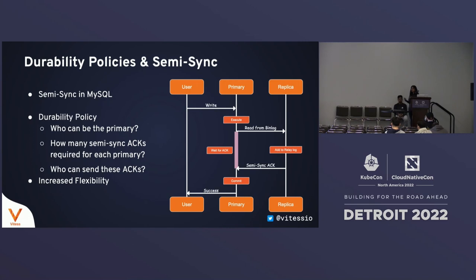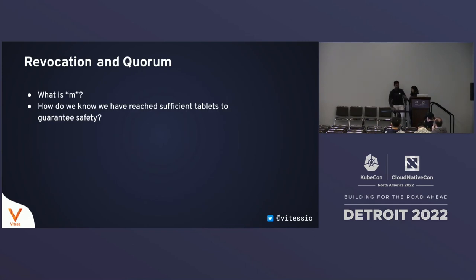The acknowledgement from the replica doesn't mean the transaction has been fully applied — it only means the replica has received and persisted it on disk. The durability policy defines how this is configured for Vitess. Semi-sync is the foundation, but with the durability policy you can configure: which replicas are eligible to be promoted as primary, how many semi-sync acknowledgements are required for each primary, and which replicas are eligible to send those acknowledgements. This gives operators increased flexibility in topology across data centers, regions, and availability zones.